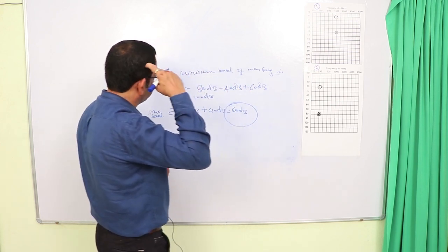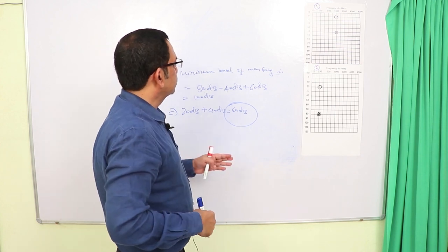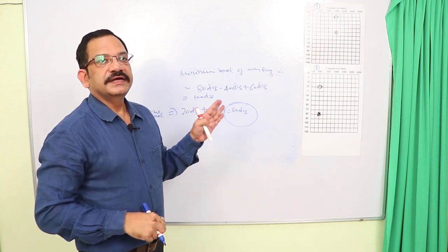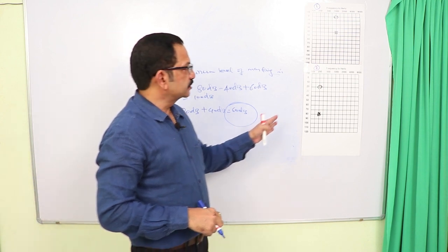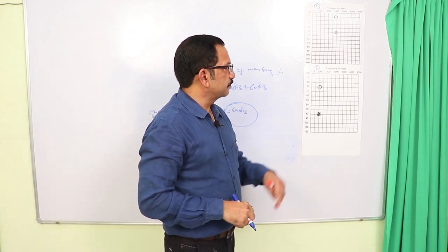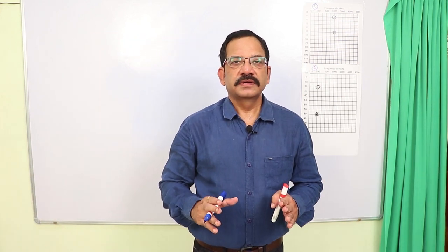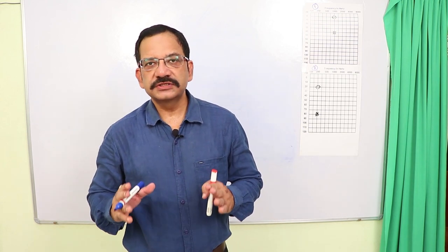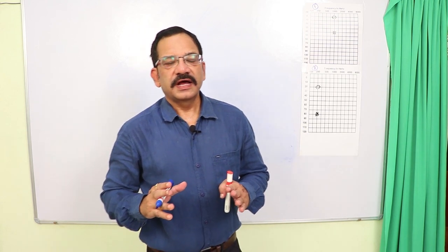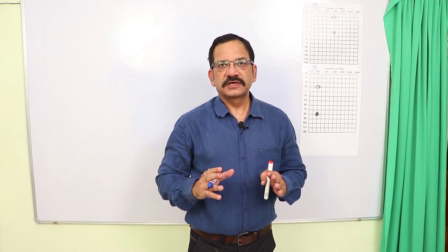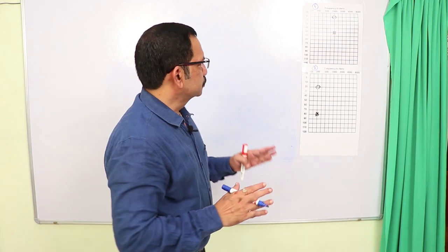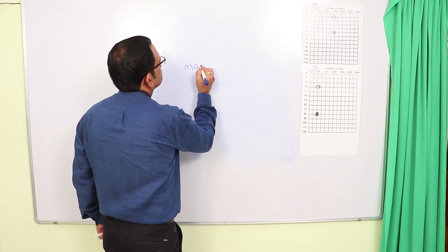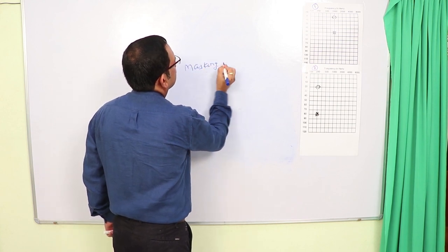Therefore, carrying out masking procedures is not possible in the second audiogram. This phenomenon was first explained by Norton and it is also known as Norton's Dilemma. So the masking dilemma is also known as Norton's Dilemma.